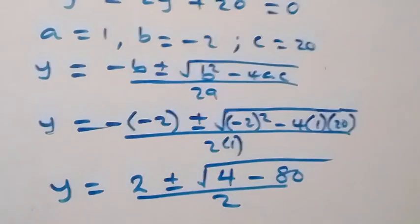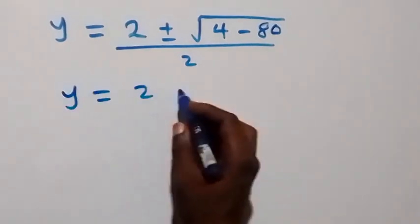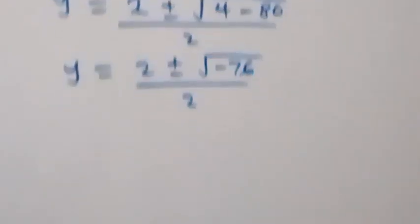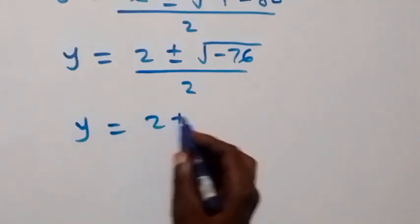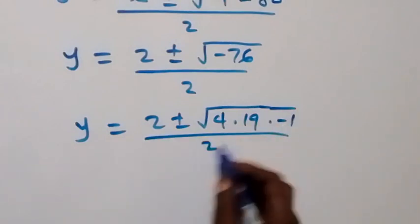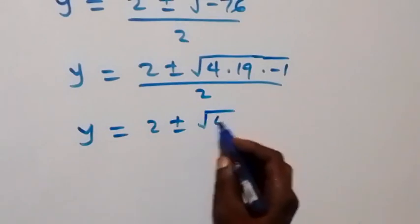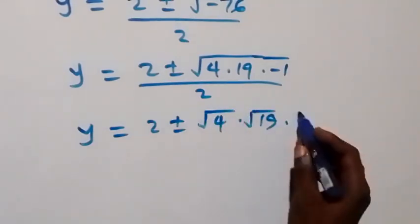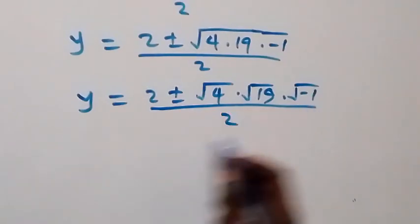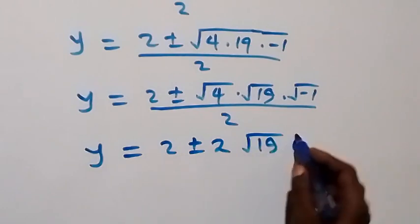We have 4 minus 80, which is minus 76. So y equals to 2 plus or minus square root of minus 76 over 2. We can write minus 76 as 4 times 19 times minus 1, giving y equals to 2 plus or minus square root of 4 times root 19 times root of minus 1, all over 2. Since root of minus 1 is i, we have y equals to 2 plus or minus 2 root 19 i, over 2.